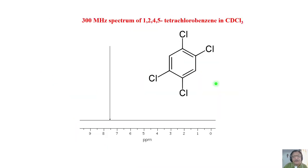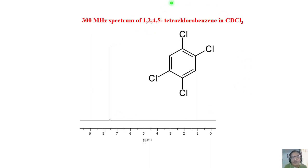A classic example of an A2 spin system is 1,2,4,5-tetrachlorobenzene. The two remaining protons at positions 1,4 are chemically equivalent. You will not see J coupling at all — it is a perfect A2 spin system. No matter which spectrometer you use, it will remain A2; it will not become AB or AX at any field strength because there are only two protons and both are chemically equivalent, giving a single peak.